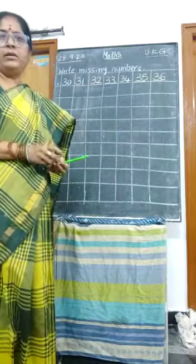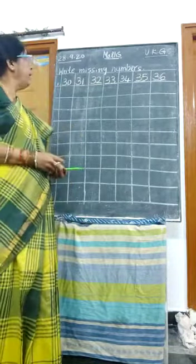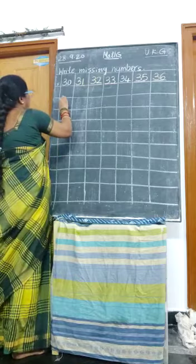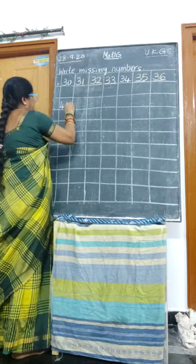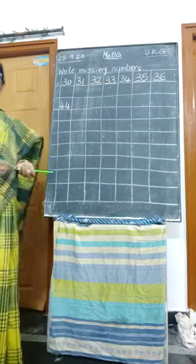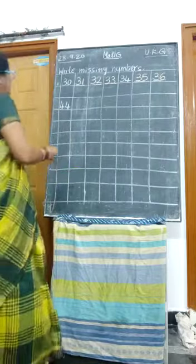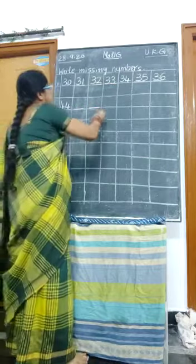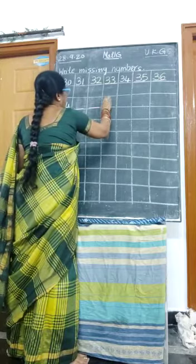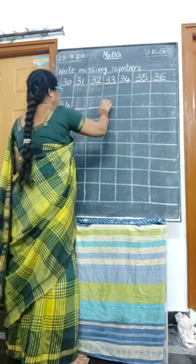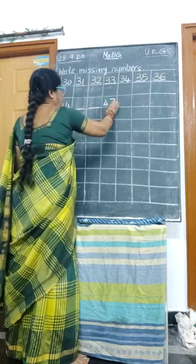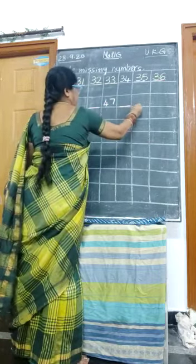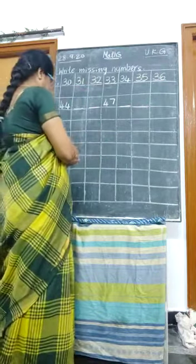Okay children. Next step. What is this number? 44. What is this number? 44. Missing number, what comes? 44 — 45, 46, 47, 48, 49, 50, 51, 52.